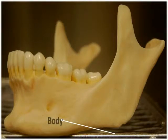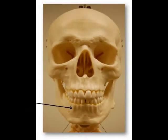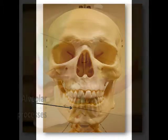The body is the curved portion of the mandible that contains the mandibular teeth. And just like the maxillary teeth, the mandibular teeth are found within the alveoli, the sockets created by the alveolar processes.